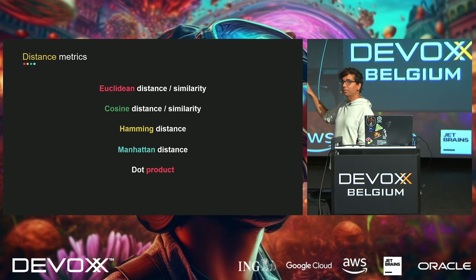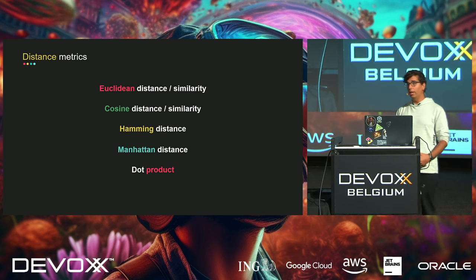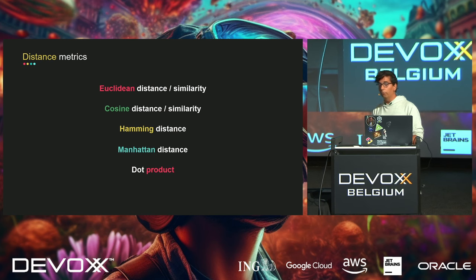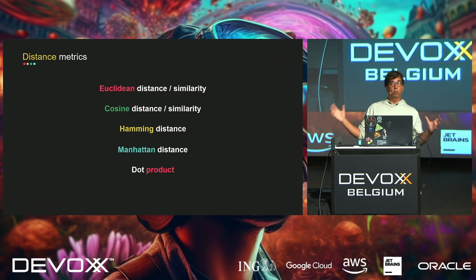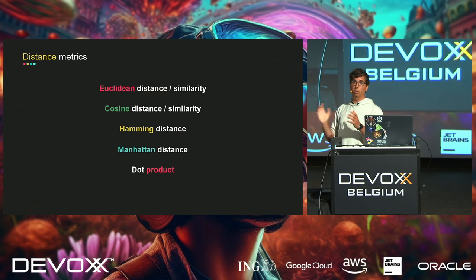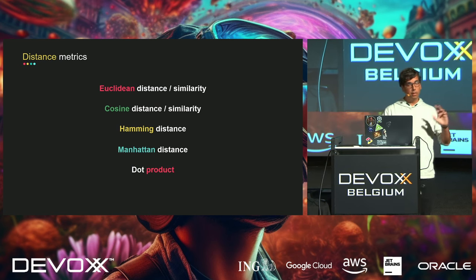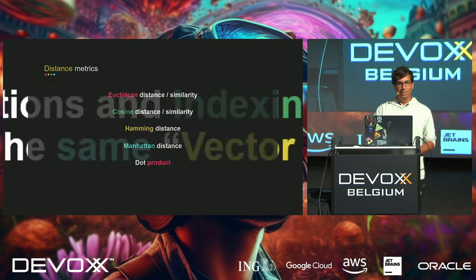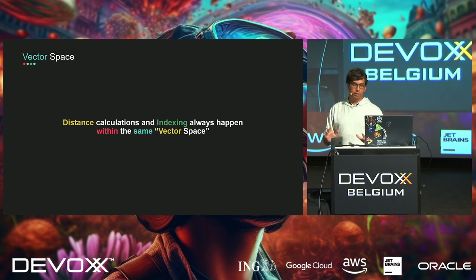The difference between distance and similarity: distance asks 'how far am I from an object?' — when distance is zero, objects are very close. Similarity asks 'how close am I?' — when similarity is one, objects are very close. You could see them as inverted. Distance calculations and indexing always happen within the same vector space.